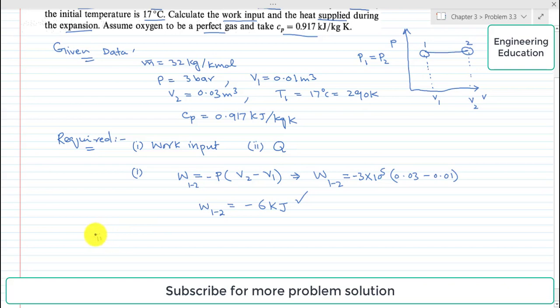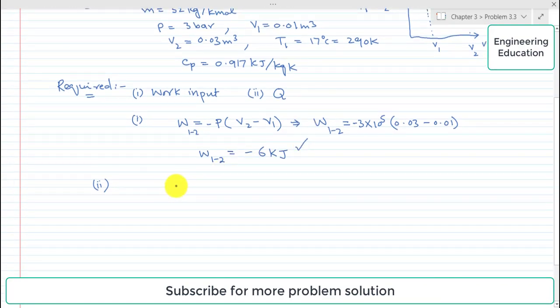Now to find the heat supplied during this process, we know that it is a constant pressure process. P1 is equal to P2. If we write the characteristic equation for state 1, it will become P1 V1 is equal to MRT1. Similarly, if we write the state equation for state 2, it will be P2 V2 is equal to MRT2. If we eliminate P1 from this, it will become MRT1 by V1. Similarly, if we write the expression for P2, it will become MRT2 by V2.